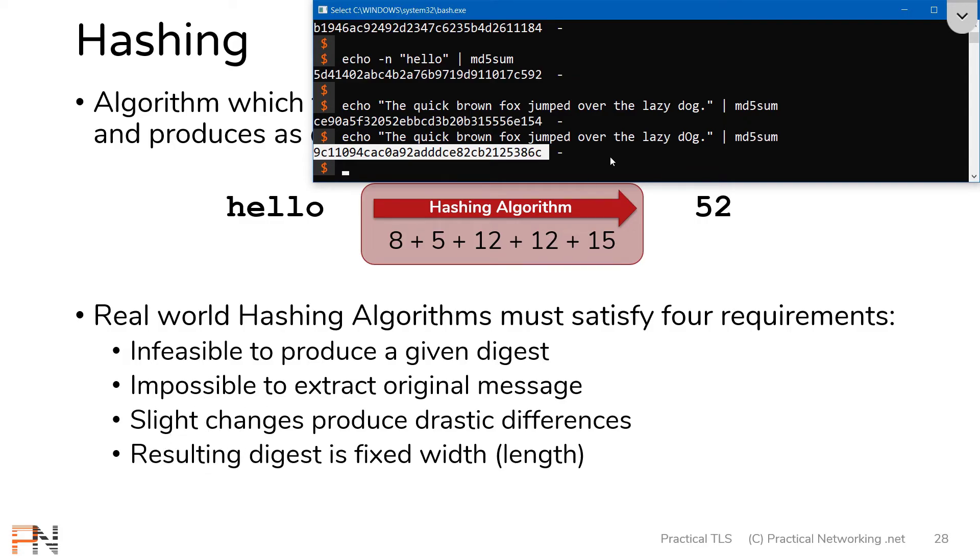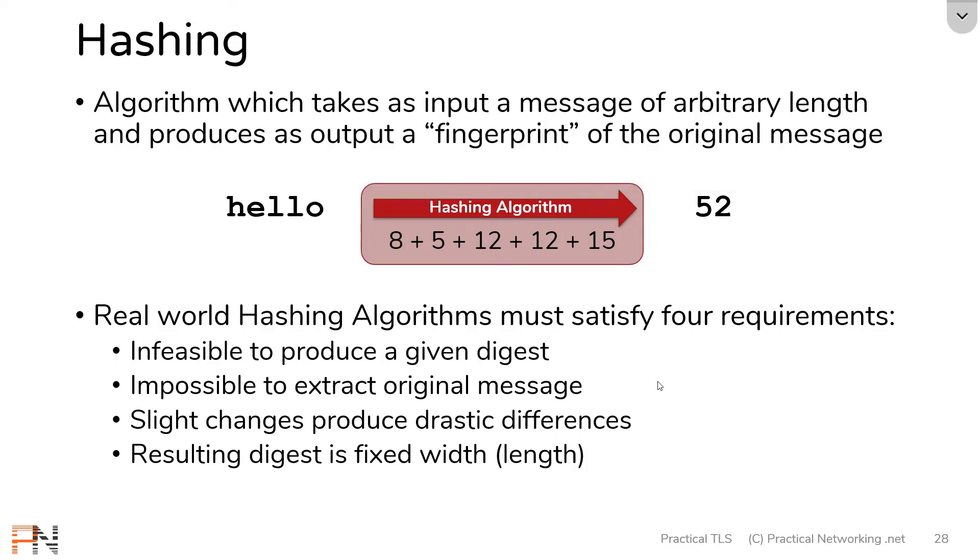Now, internally, the way that works is a hashing algorithm is not simply one calculation done on the original message. It's actually a calculation done and then iterated over and over to produce the final digest. So way in the beginning, the difference might not be that big, but as it's continually iterated internally, the difference is going to get bigger and bigger to create that drastic difference. This effect is sometimes called the avalanche effect. Either way, hopefully this proves the behavior that a hashing algorithm does and improves these four requirements.